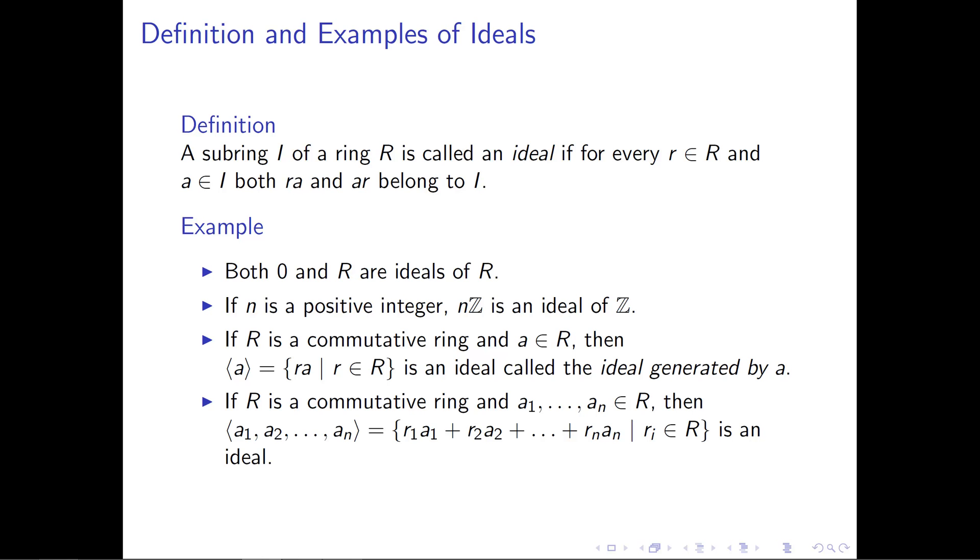This equals all possible combinations r₁a₁ + r₂a₂ + ... + rₙaₙ, where each rᵢ is any element of R and the aᵢ are our special elements. So all possible sums of that form together form the ideal generated by a₁ through aₙ.